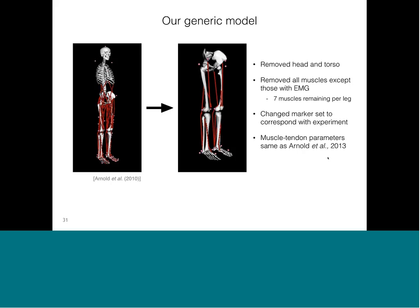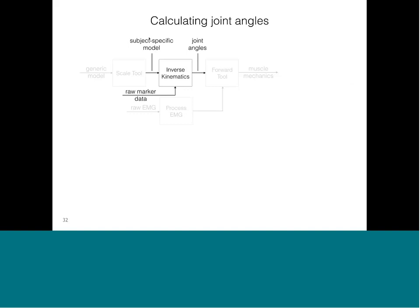With a scaled model for each subject, we took this model and raw motion capture marker data from our experiment and fed them into our inverse kinematics tool to generate joint angles. These joint angles were important because we wanted to prescribe kinematics for simulations rather than letting the muscles fully drive the model. We opted for prescribing kinematics to give us more confidence in our estimates of muscle tendon mechanics.